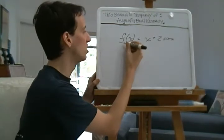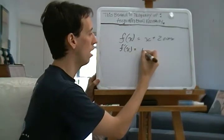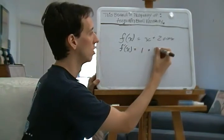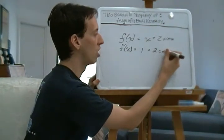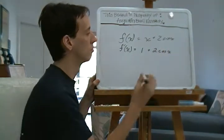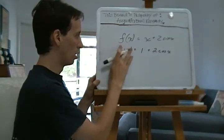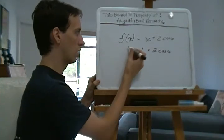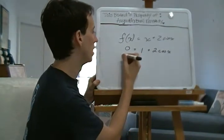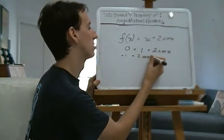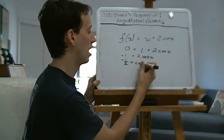Let's quickly differentiate: f'(x) = 1 + 2 cos(x), since the derivative of sine is cosine. We set that equal to 0, do the arithmetic, and get negative 1 = 2 cos(x), so cos(x) = -1/2.